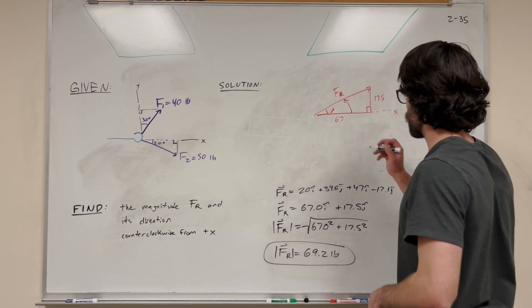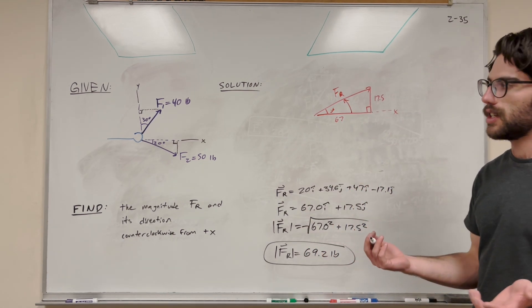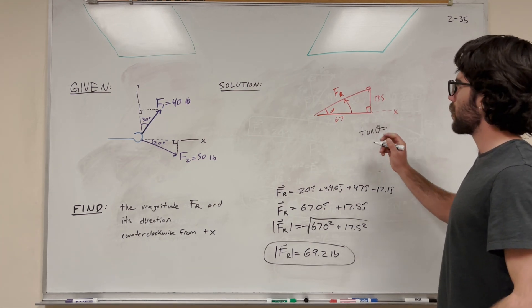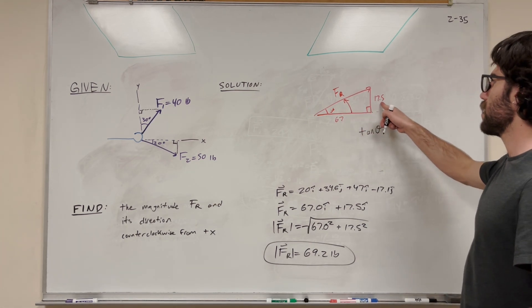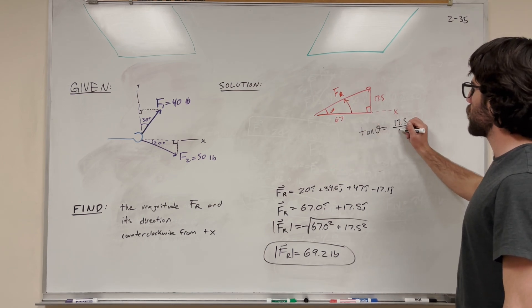So let's go ahead and find it. We're doing tangent. Should we do tangent? We can do sine, cosine, or tangent. I like to do tangent to find this. So I'm going to say tangent of theta. We're finding this theta. So it's going to be opposite over adjacent. We're going to do opposite, 17.5 over adjacent, 67.